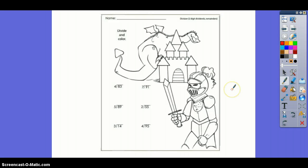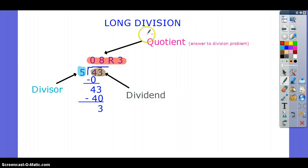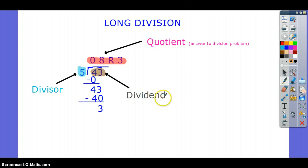You're going to need this paper here with the dragon and knight to get started. I want to talk to you about what the words are that we use for long division. To read this problem, I would say 43 divided by 5. 43 would be my dividend, and 5 would be my divisor. When I solve the problem, my answer that's highlighted in pink is called my quotient.